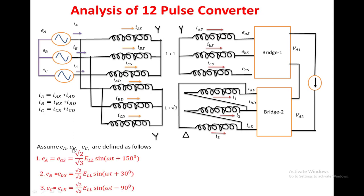Here we have defined ea, eb, ec. ea equals root 2 divided by root 3 times E_LL times sin(ωt + 150°), where E_LL is the line-to-line RMS voltage. In the same manner we define the remaining phase b and phase c voltages.